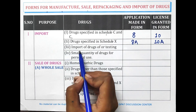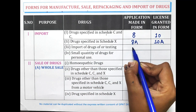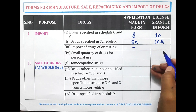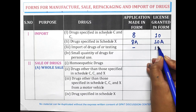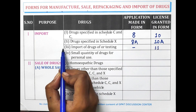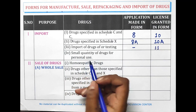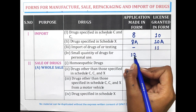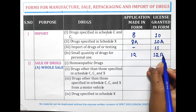For the import of drugs for testing, no application needs to be filed but the license is granted in Form 11. For the import of small quantities of drugs for personal use, application Form 12 has to be filled up and the license is granted in Form 12B.